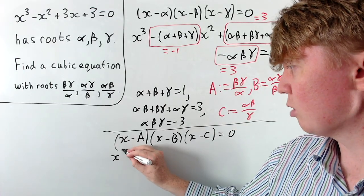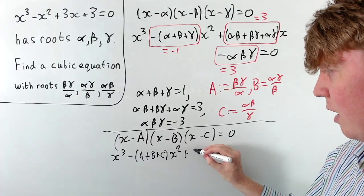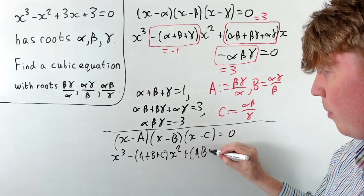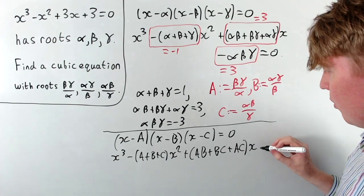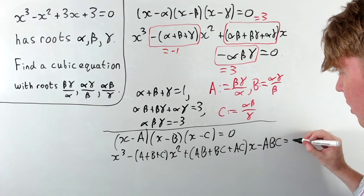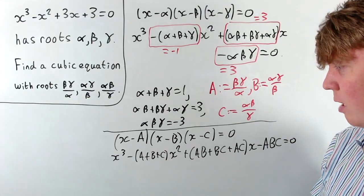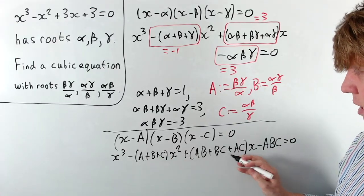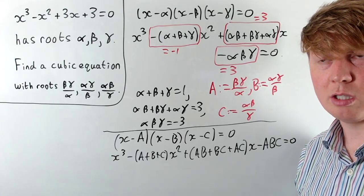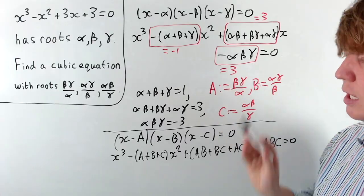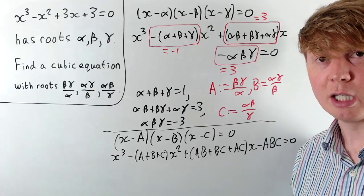When we expand this we get x cubed, minus A plus B plus C times x squared, plus AB plus BC plus AC times x, minus the product ABC, all equal to zero. The problem is now effectively reduced to finding what A plus B plus C is, what AB plus BC plus AC is, and what the product ABC is. If we can find these in terms of what we already know about alpha, beta, and gamma, we've solved the problem without solving the cubic.